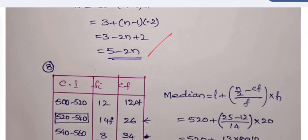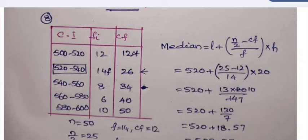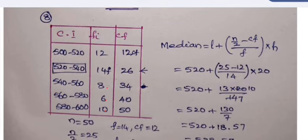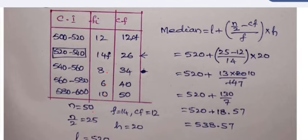Here a frequency distribution table is given: 500 to 520, 520 to 540, 540 to 560, 560 to 580, 580 to 600. Frequencies are given: 12, 14, 8, 6, 10. And here the total of all these frequencies is 50. 50 by 2, that is n by 2, is 25. And in cf we can see that 25 falls here in 26, so that's why selecting this class which is 520 to 540.